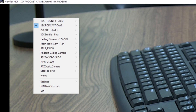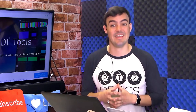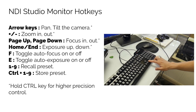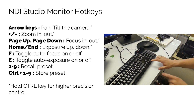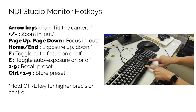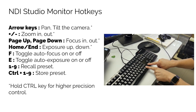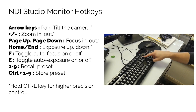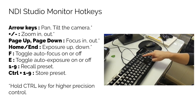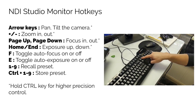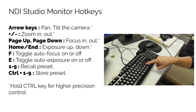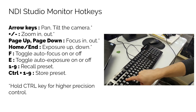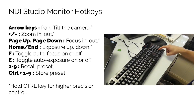A little-known feature of NDI Studio Monitor is the built-in hotkeys for PTZ camera operation. The arrow keys can be used for pan, tilt, and zoom. The plus and minus buttons can be used to zoom in and out. The page up and down keys can be used to focus in and out. The home and end keys can turn exposure up and down. The F key toggles auto focus on and off. The E key toggles auto exposure. Numbers one through nine recall presets, and you can hold Control plus one through nine to store a preset.